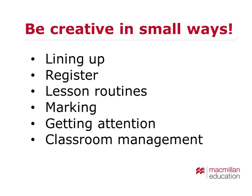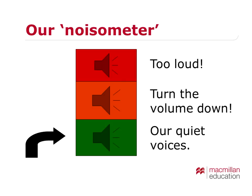Lesson routines can also be creative — for example, starting with a creative action and exercise rhyme for younger children, or news of the day for older ones. With marking, sometimes we correct work ourselves, sometimes it's peer correction, self-correction, or only corrected for one thing. Getting attention can be creative too — I have a little tambourine, others use a bell, put on a funny hat, or stand in a special place. We can also be creative with classroom management — I use a noisometer, like traffic lights: red means too loud, orange means turn the volume down, green means quiet voices. The benefit is the children end up doing your classroom management for you.